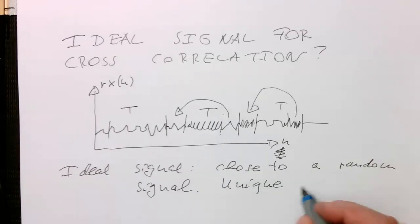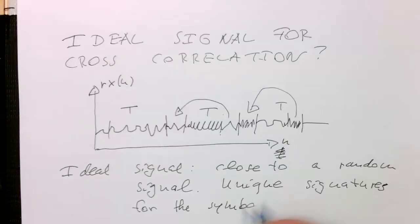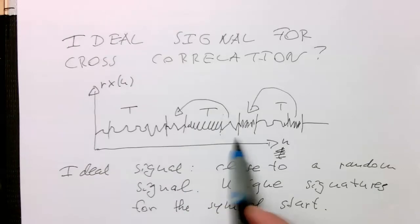Unique signatures for the symbol start. It also means that the cross-correlation stays more or less zero all the time except when these similarities show up. And then it will just quickly go to its squared value and then drop down to zero.